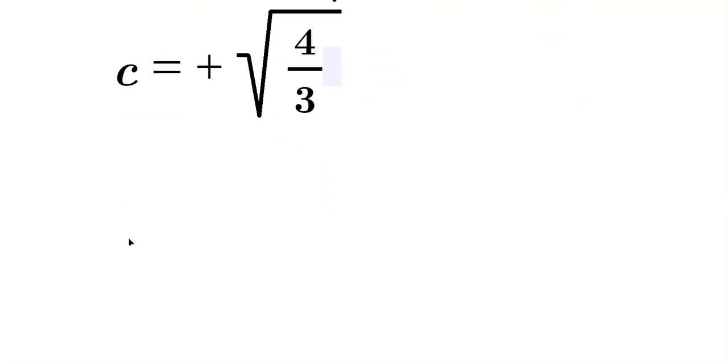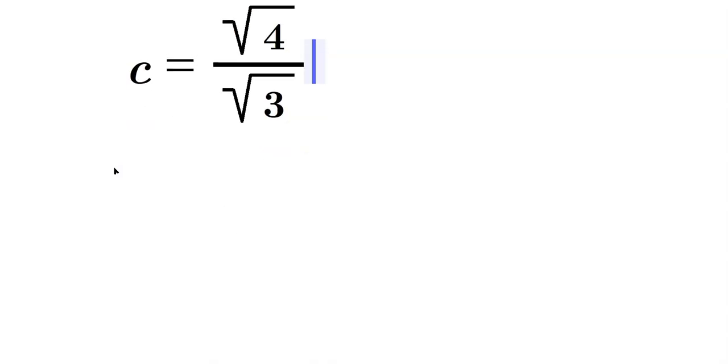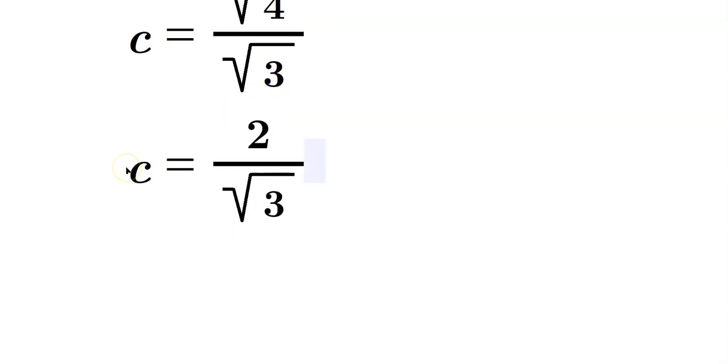Now let's simplify this positive root of 4 over 3. That's the same as writing c is equal to. We can distribute the root operation to the 4 and the 3 independently. That's allowed. So c would be equal then to the root of 4, which is 2 over the square root of 3. And that's our value, actually.